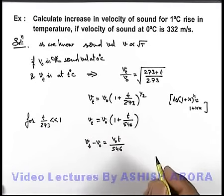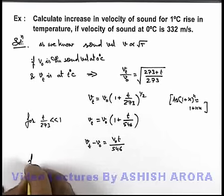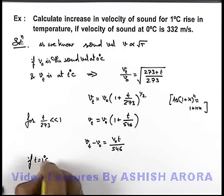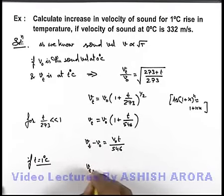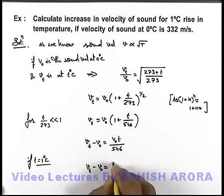And we're required to find 1 degree increase in temperature. If t is equal to 1 degree centigrade, we can see v t minus v not is equal to v not by 546.